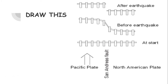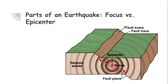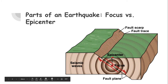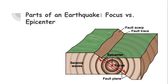Now let's look at the parts of the earthquake: the focus and the epicenter. The focus is the point below ground where the earthquake starts — where the earthquake begins underground. It can be fairly shallow, maybe only a few miles beneath the surface, or it can be really deep, up to 700 kilometers below the earth's surface. The epicenter is on the surface — it is the point on the surface directly above the focus. That's what you need to know about focus and epicenter.